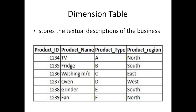The dimension table stores the textual description of the business. For example, this product table holds product ID, product name, product type, and product region. In this product table, we have textual information. The first column — the ID — is a key.